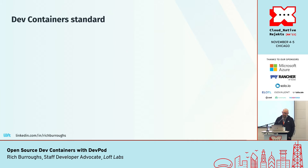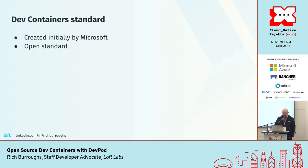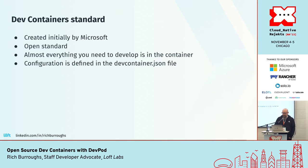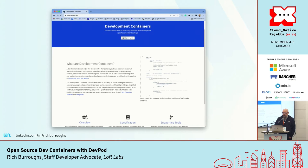Around the same time, the dev container standard was created, initially by Microsoft for Codespaces and VS Code. It's an open standard though. One of the great things about it is that almost everything you need to develop is in the container — you have an IDE and then the dev container has everything else. It solves a lot of the problems we've been talking about, and the configuration is defined in a file called devcontainer.json. The website for the standard is containers.dev.